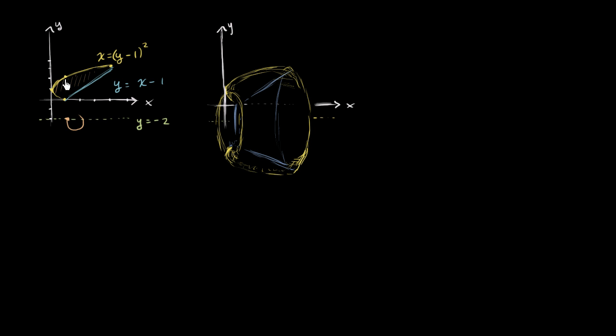So what we're going to do, once again, is we're going to imagine constructing these little rectangles that have height dy, and what we're going to do is rotate those rectangles around the line y equals negative 2. So let me draw that same rectangle over here, and when you do that, you construct a shell.